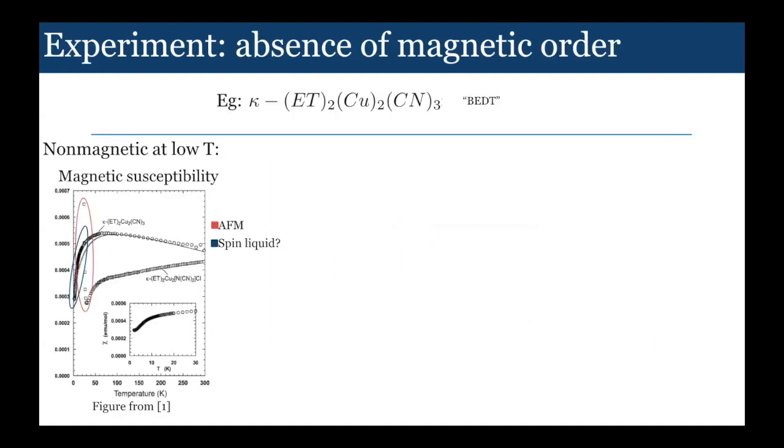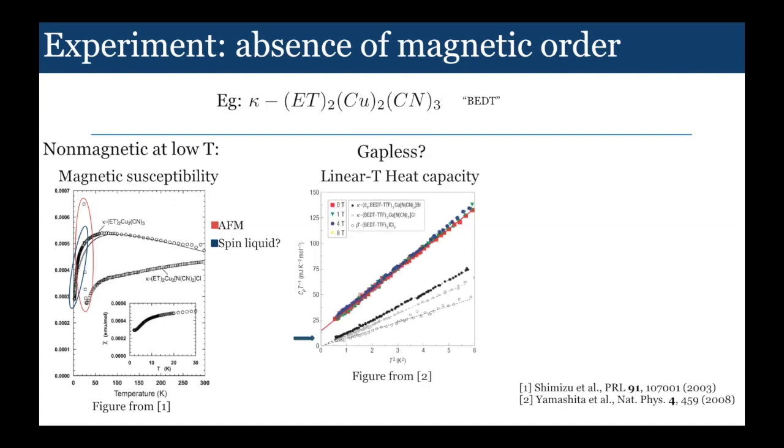So what's seen in experiment? I'll mention the BEDT first. At the lowest temperatures, they can look at the magnetic susceptibility and compare two different versions of this compound. One of them is ordered, showing a big spike in susceptibility, indicating it's an antiferromagnet. But in the BEDT compound, there's no feature in susceptibility down to the lowest temperatures, which is evidence for a lack of magnetic order. I think this is pretty incontrovertible.